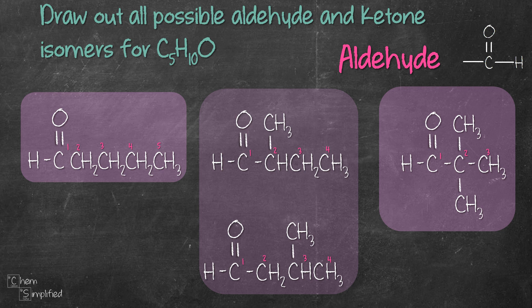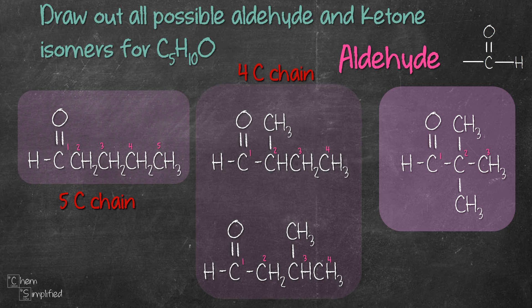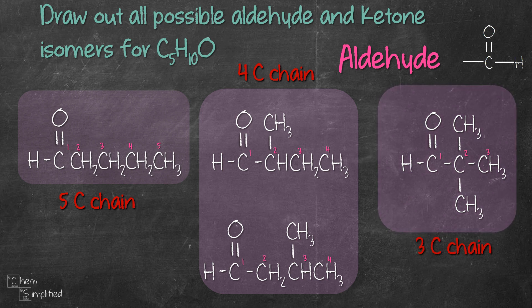Quick recap on how we drew all four isomers for aldehyde. We started with the longest chain which is the five carbon chain and then we move on to the four carbon chain. We stick the remaining carbon on C2 and then we draw another structure and place the remaining carbon on C3. Once we've exhausted the four carbon chain we then shorten the chain further to three carbon chain and then we stick the remaining two carbons on C2.